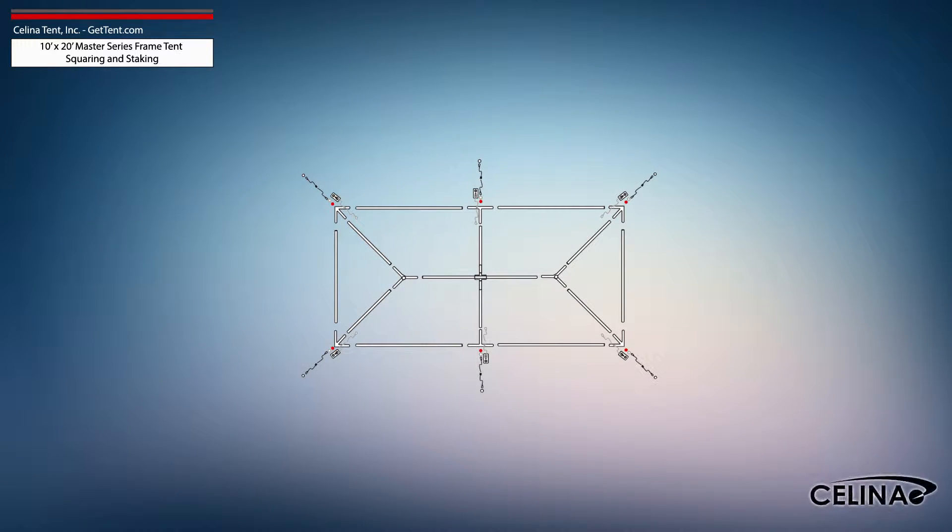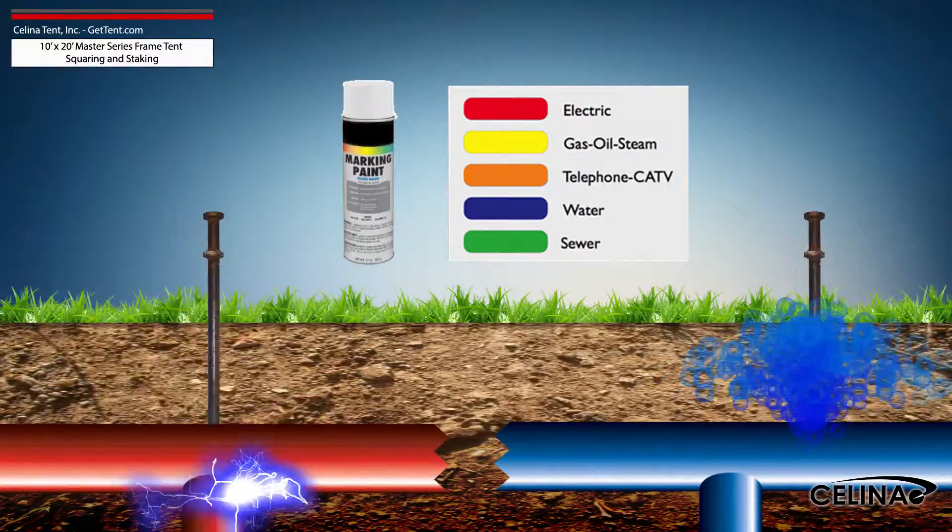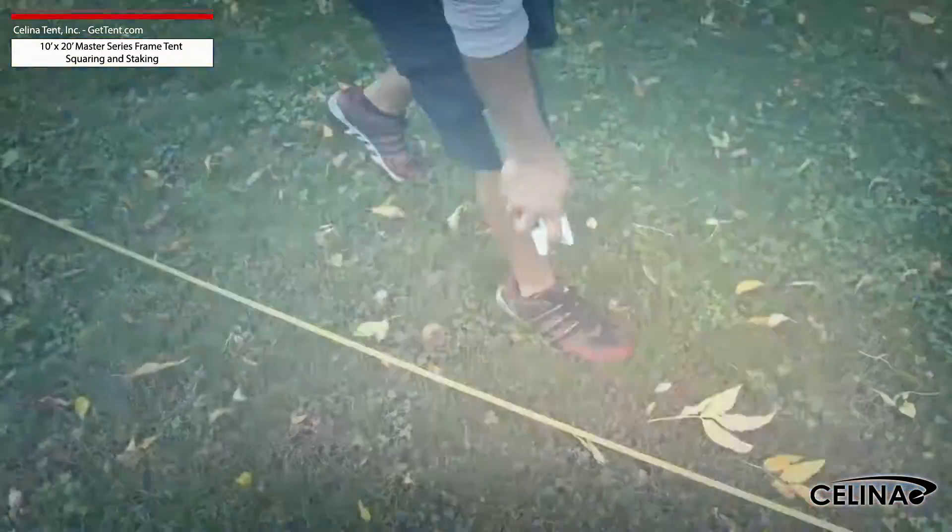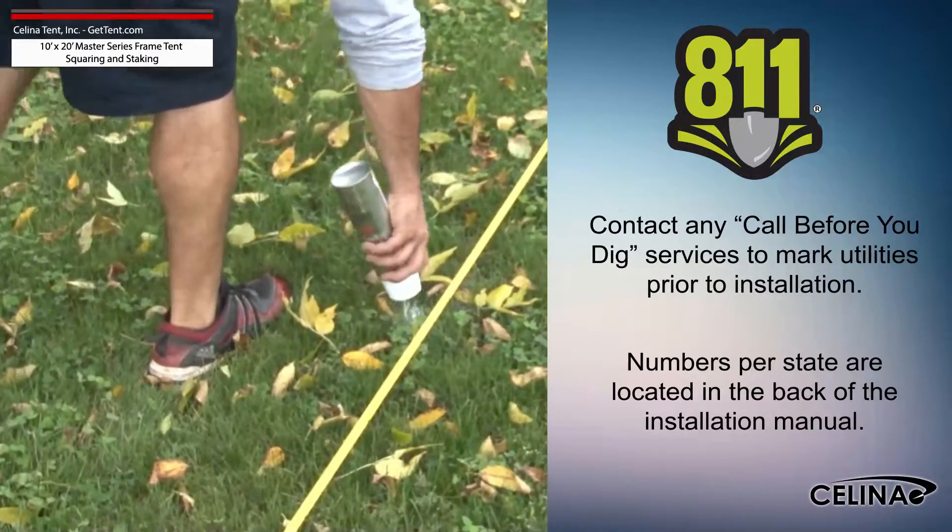Tent squaring allows the installer to accurately place all tent hardware and install tent stakes prior to beginning setup, and helps them avoid any marked underground utilities. Utilities must be marked by your state's local utility services prior to any tent installation.